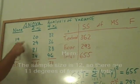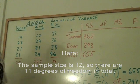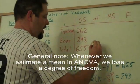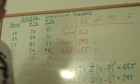Here we have 4 plus 4 plus 4. We have 12 observations, but we're estimating the mean. Therefore, we have 11 degrees of freedom.